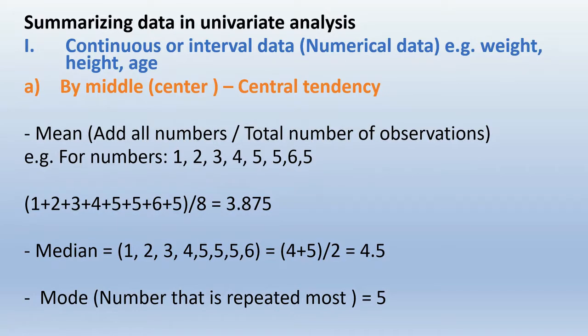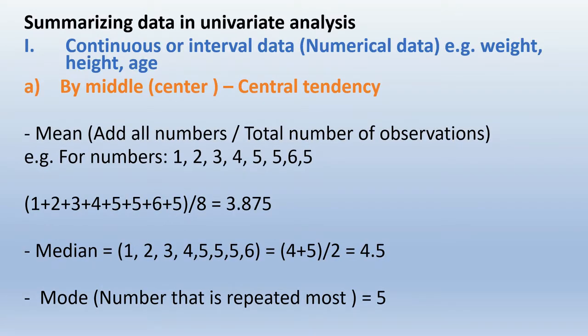Mode is the number that is repeated the most — in this case it is 5. That's how we can summarize by central tendency.